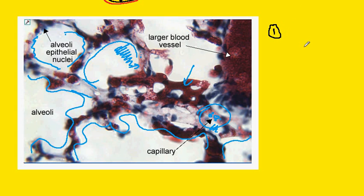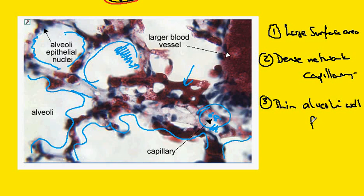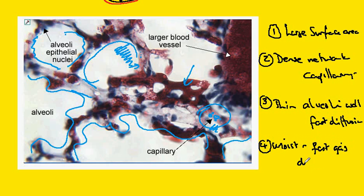Once more, the adaptations are: one, large surface area; two, dense network of capillaries — meaning there are a lot of capillaries; three, thin alveoli walls so that we have fast diffusion; and four, the inside walls of the alveoli are moist so that the gases can dissolve quickly, giving us fast gas dissolving and much quicker diffusion. These are the adaptations of the alveoli for gas exchange.